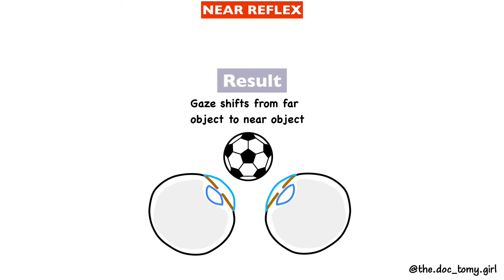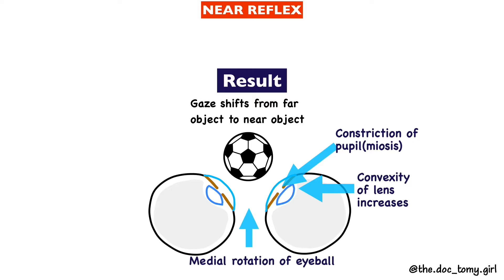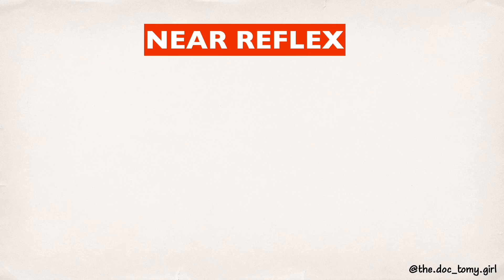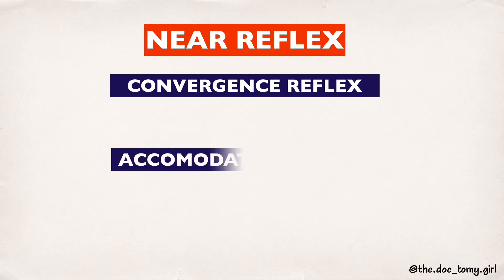There is constriction of the pupil, known as miosis, and there is medial rotation of the eyeball. The near reflex is in fact a combination of two reflexes: the convergence reflex and the accommodation reflex. The convergence reflex is a contraction of the pupil on convergence.